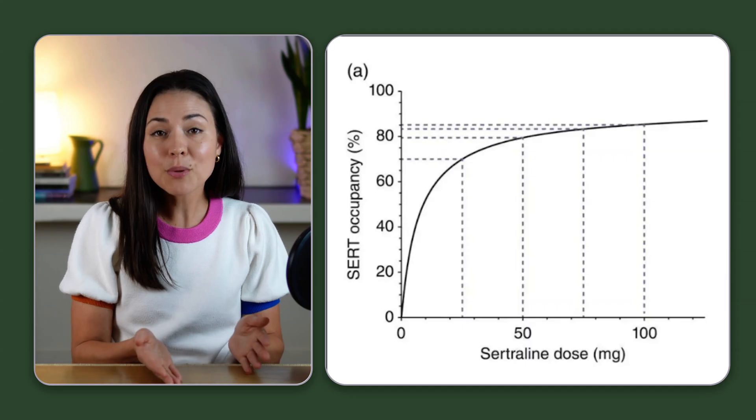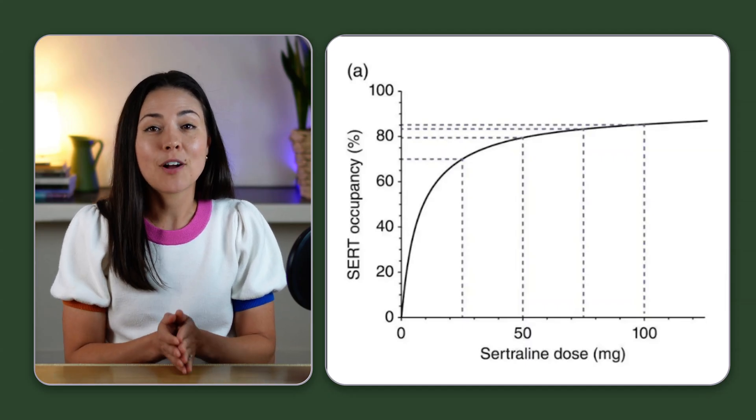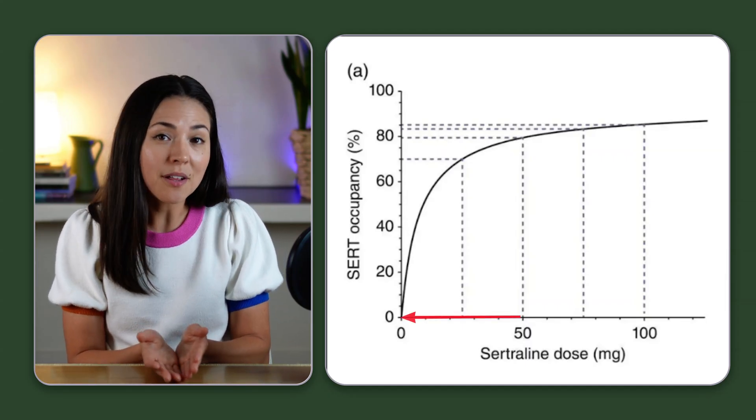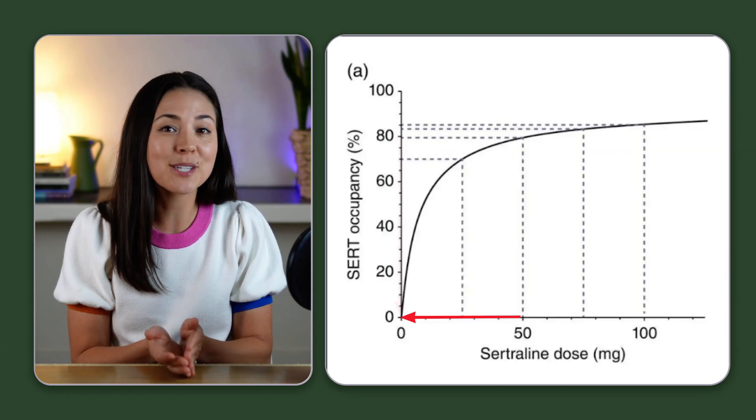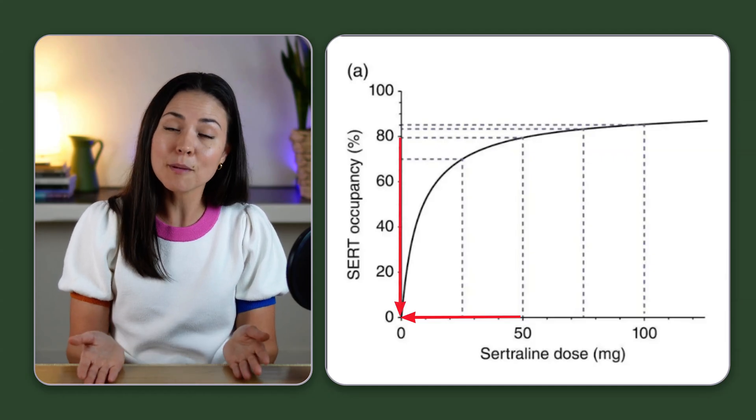But then at the lower doses, the curve gets steep. So dropping from, say, 50 milligrams to 30 milligrams or from 20 milligrams to zero means a massive change in transporter occupancy.